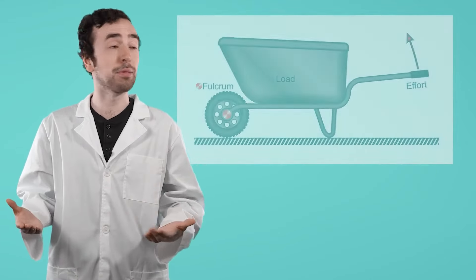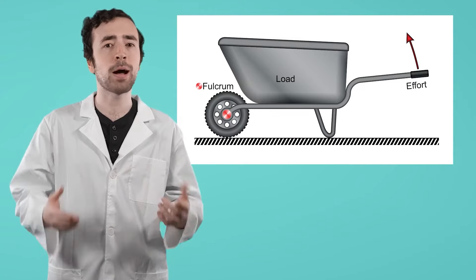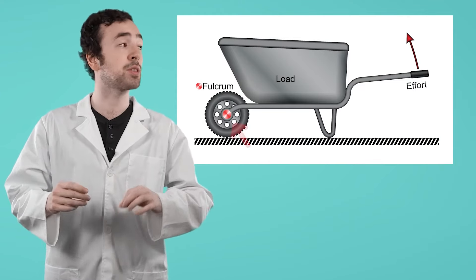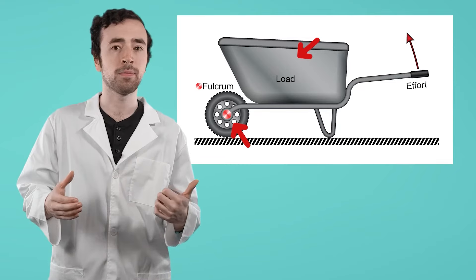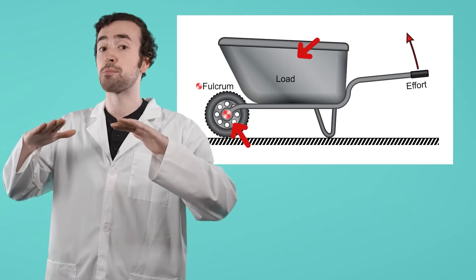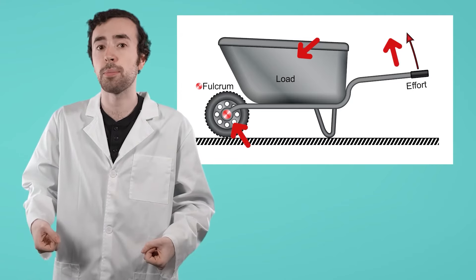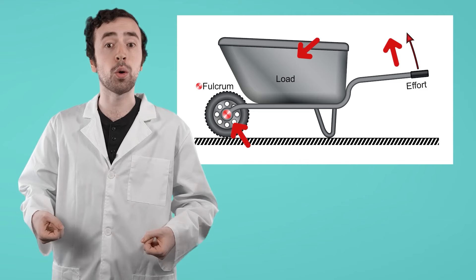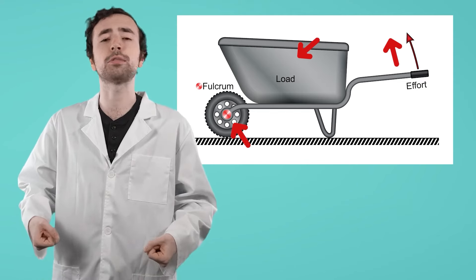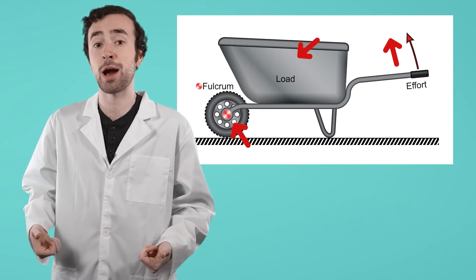Another great example of a lever that you know about is a wheelbarrow. Now, this lever looks a little different because the fulcrum is on the end, and the load goes in the middle. Also, instead of our effort pushing down, we lift the wheelbarrow up, and the load comes up with us. The wheelbarrow allows us to lift objects much easier than without one.